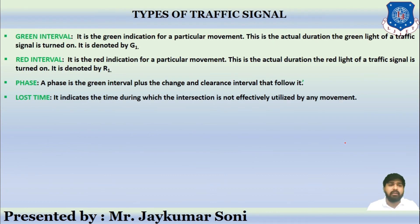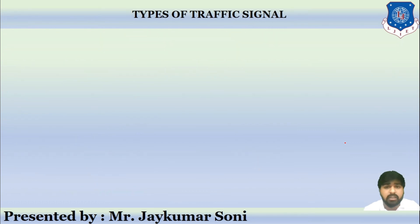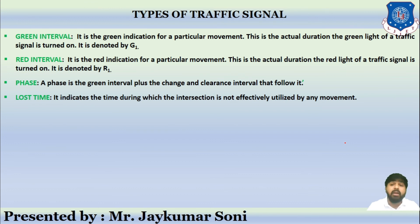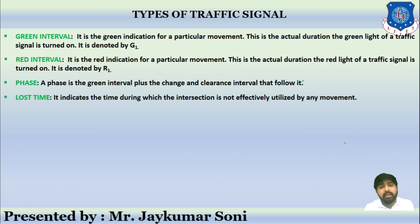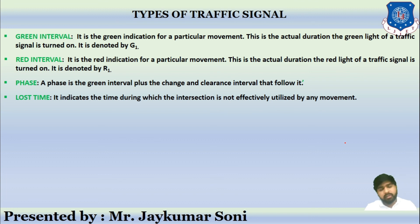Additional signal terminologies include: green interval — the actual duration the green light is turned on, denoted g1; red interval — the actual duration the red light is turned on, denoted r1; phase — the green interval plus the change and clearance interval that follow it; and lost time — the time during which the intersection is not effectively utilized by any movement. These are the various signal terminologies. I hope you understood the concept thoroughly.